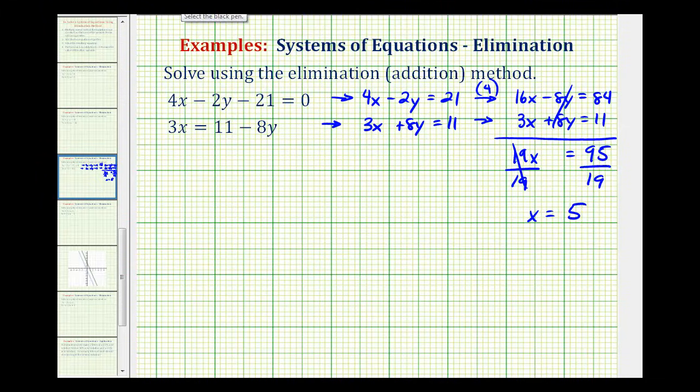But we're not done because, remember, our solution is an ordered pair. We know the x value must be 5, but we still have to go back and determine the value of y. And we do this by performing back substitution into one of the original equations. For example, if we call this equation 1 and this equation 2, let's substitute 5 for x in equation 1.